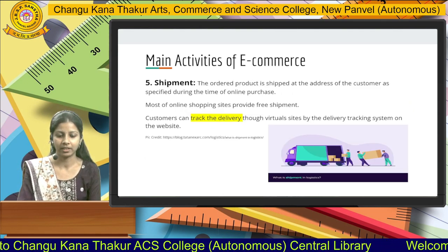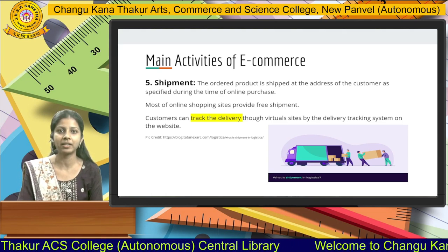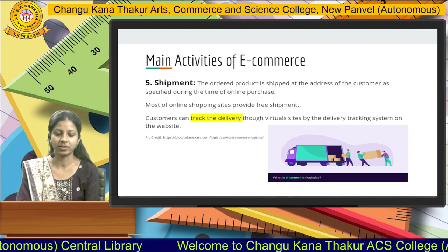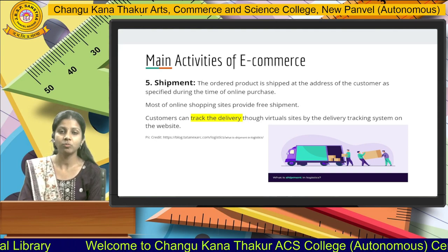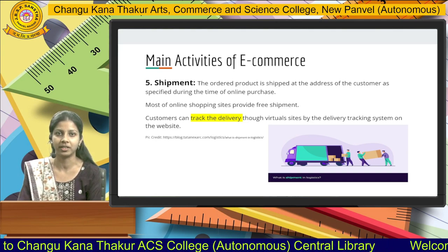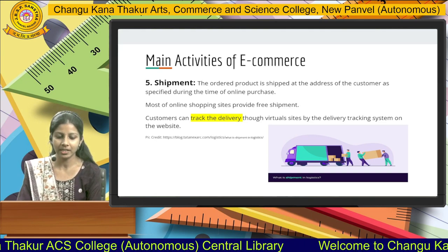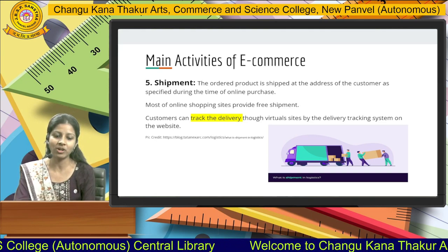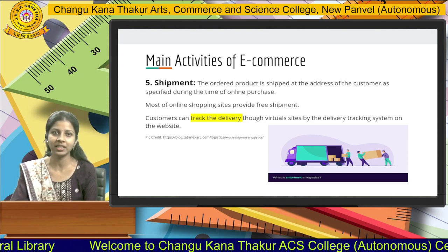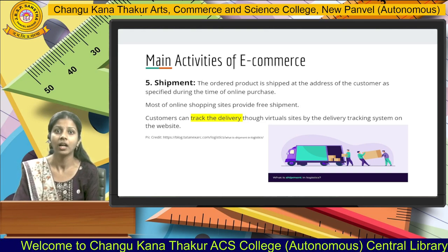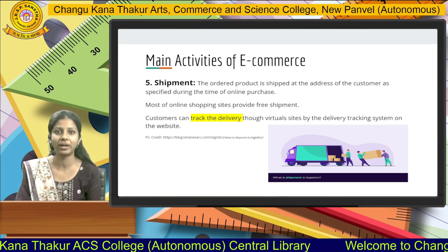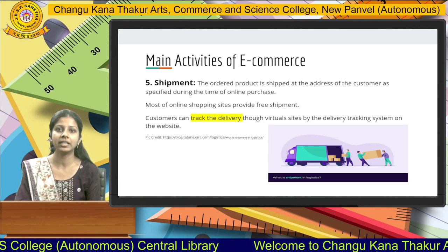Next, we have shipment. Shipment is the process of delivery of goods from the logistics department to your actual doorstep. The ordered product is shipped to the address of the customer as specified during the time of online purchase. Most online shopping sites provide free shipment and free delivery to their customers in order to encourage purchases. Customers can also easily track delivery through virtual sites using a delivery tracking system — for example, checking whether a product is scheduled for dispatch and on which date delivery has been arranged.